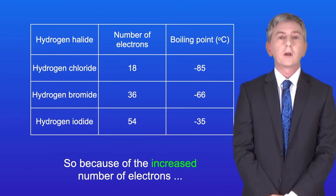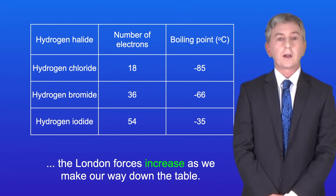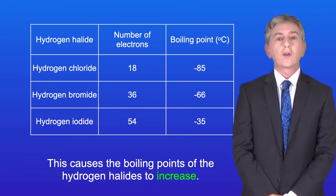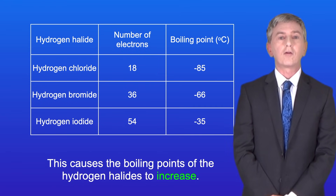So because of the increased number of electrons, the London forces increase as we make our way down the table, and this causes the boiling points of the hydrogen halides to increase.